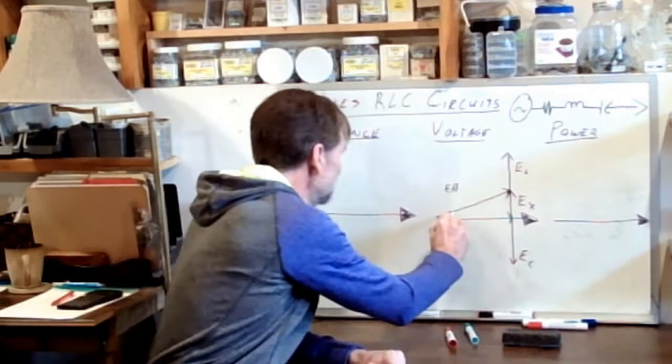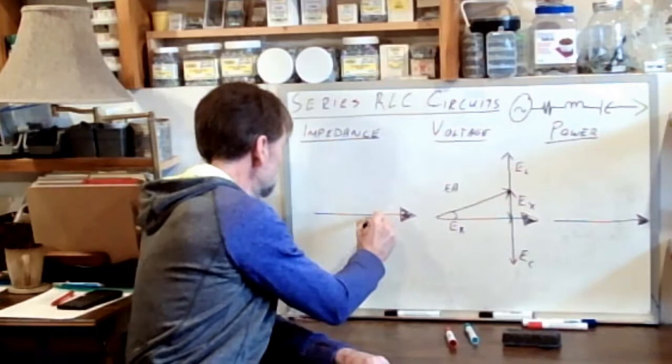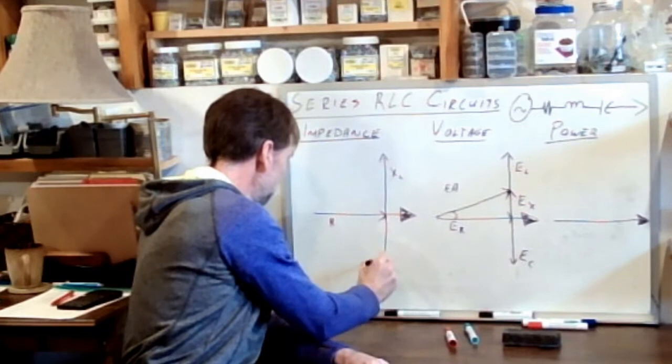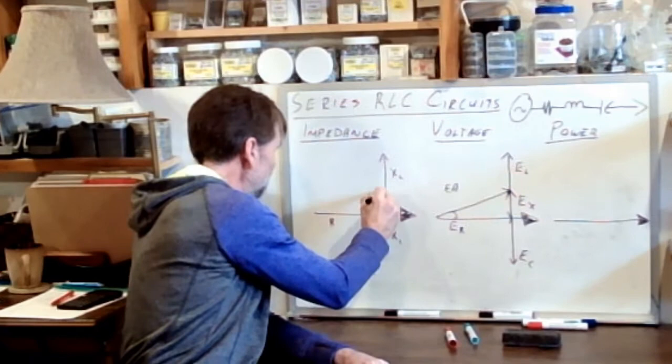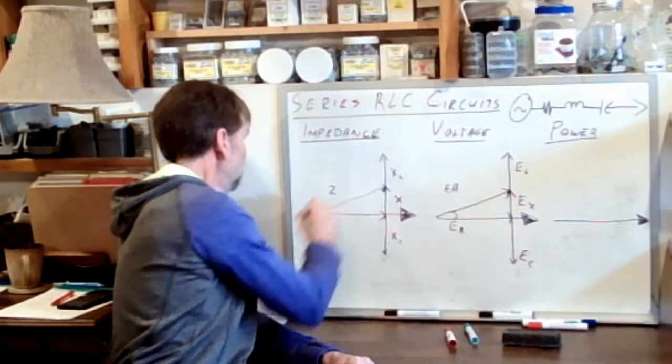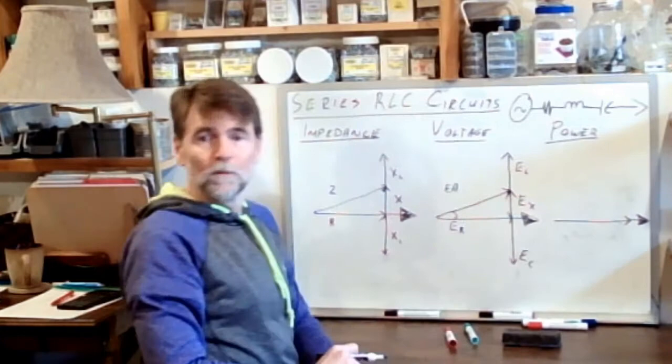So whatever this angle ends up being, it's going to be the same angle on all of our triangles. So there's R. There is XL. Let's keep that a little shorter. XC. And we end up with what I'm just going to call X. Draw the hypotenuse. And this is Z.